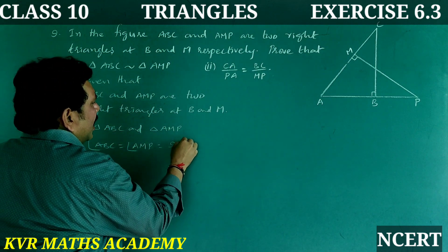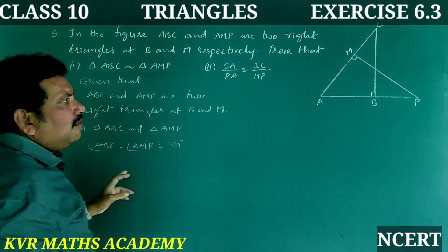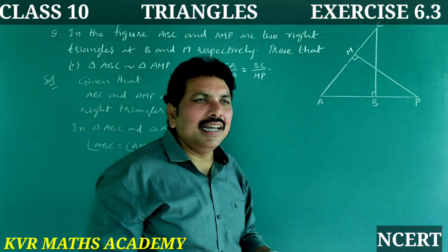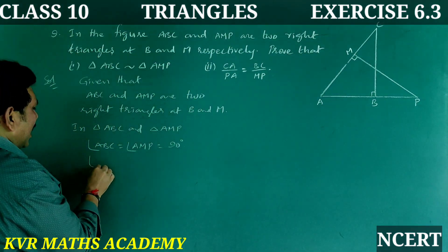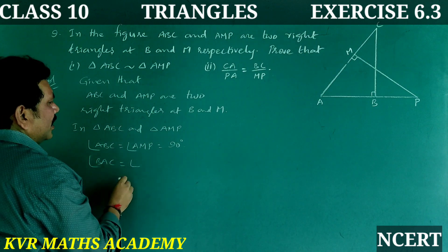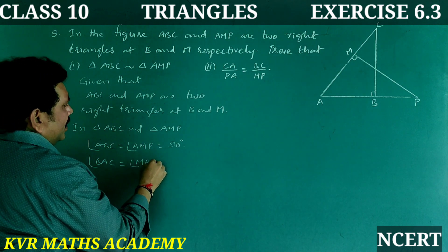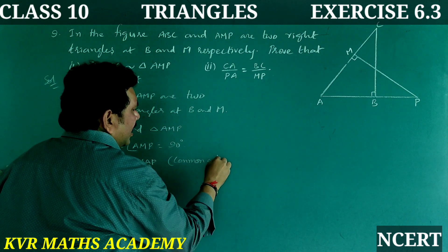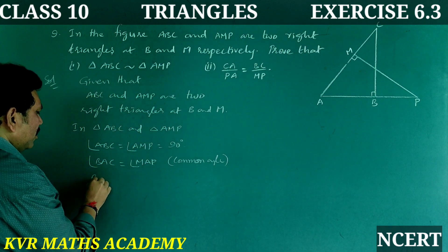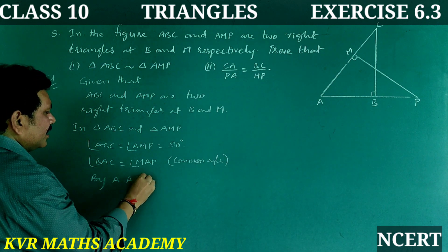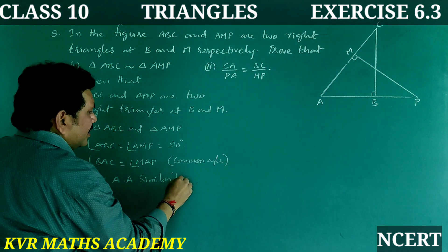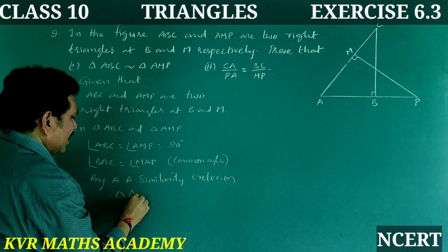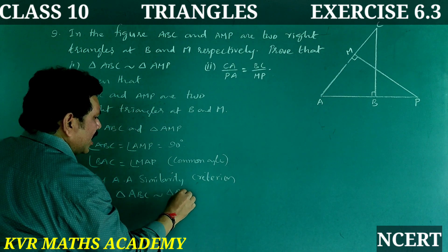For both triangles, angle A is common. So angle BAC = angle MAP. By AA similarity criteria, triangle ABC is similar to triangle AMP. Hence proved.